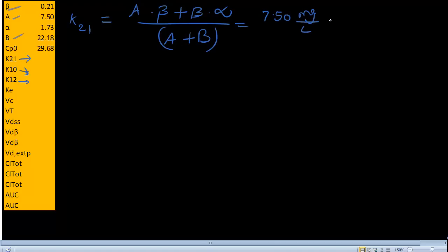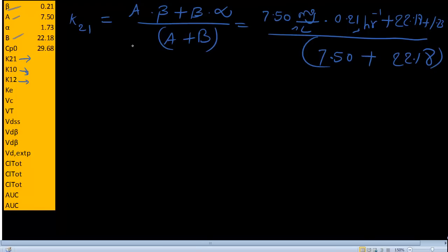Times beta, that is 0.21 hour inverse, plus B which is 22.18, plus alpha that is 1.73, and units are the same as mentioned here. Hour inverse and mg per liter, divided by A plus B is 7.50 plus 22.18. This is CPO, the concentration at time zero. If you solve this, you'll get k21 of 0.59.